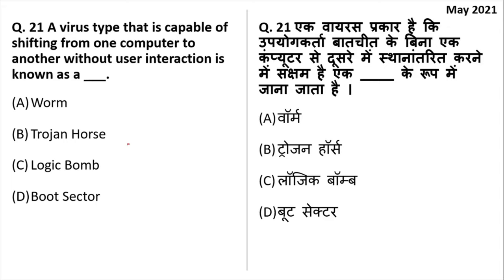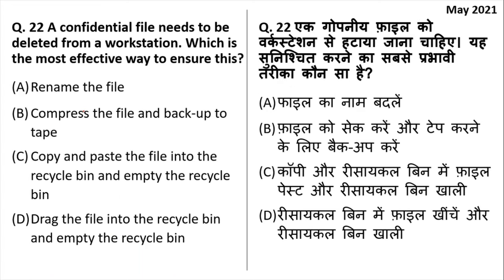A virus type that is capable of shifting from one computer to another without user interaction is known as a worm. Virus requires human activation — you have to open a file for the virus to execute. But worms are a kind of malware that do not require human interaction; they have the power to move from one computer to another and infect all computers automatically.